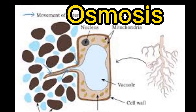Water passes from the soil water into the root hair cell cytoplasm by osmosis. Soil water has a higher water potential than the root hair cell cytoplasm, therefore water and minerals enter from the soil into the root cytoplasm by means of osmosis.